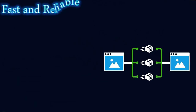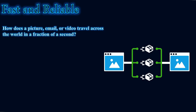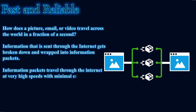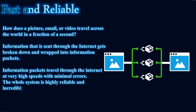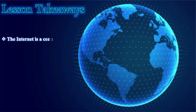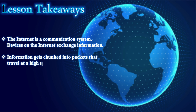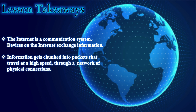How does a picture, email, or video travel across the world in a fraction of a second? Information sent through the internet gets broken down and wrapped into information packets. Information packets travel through the internet at very high speed with minimal errors. The system is highly reliable and incredibly fast. Lesson takeaways: the internet is a communication system; devices exchange information; and information gets chunked into packets that travel at high speed through a network of physical connections.